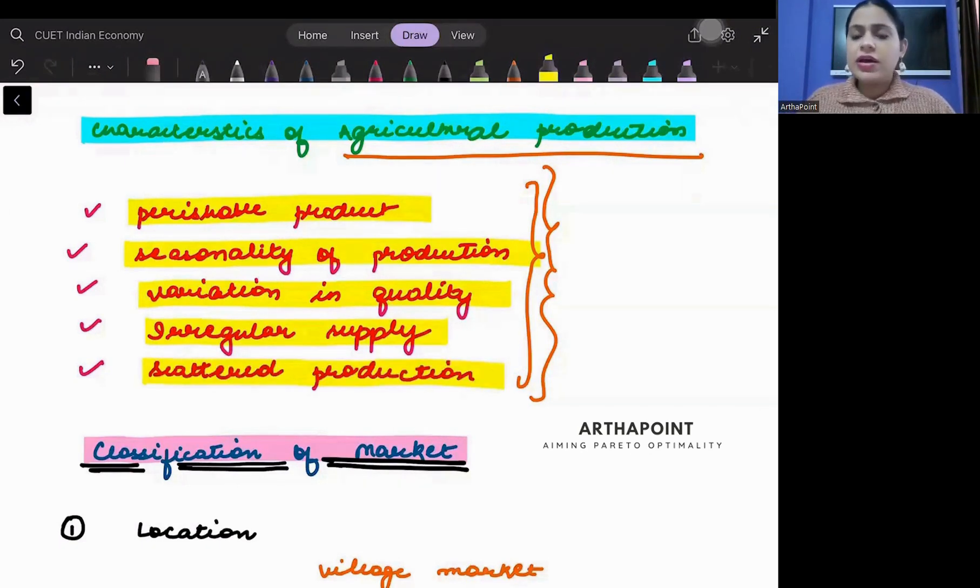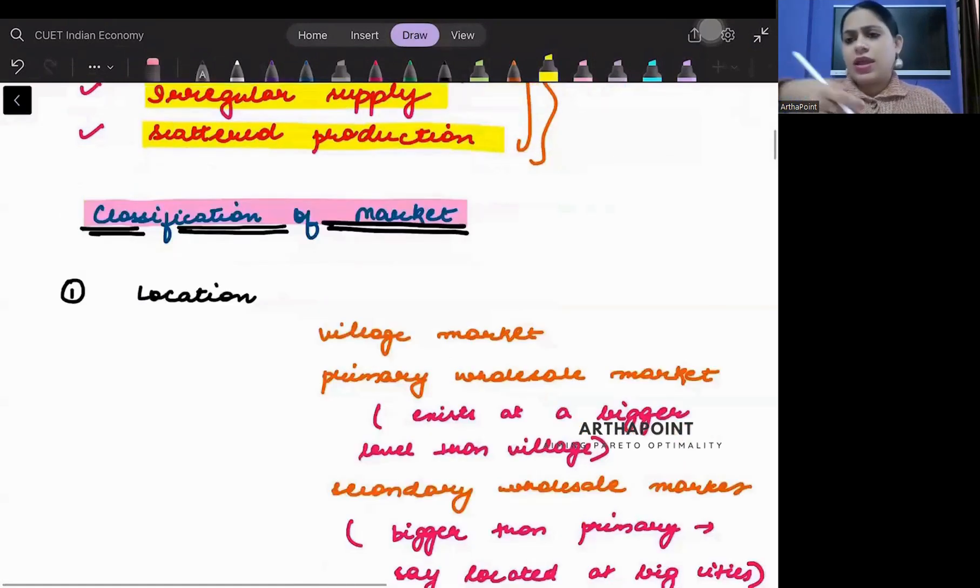And scattered production means production is very scattered. It's not like a factory where everything is produced in one place.